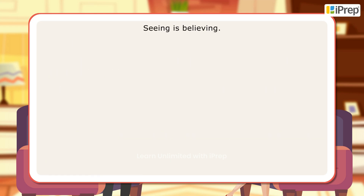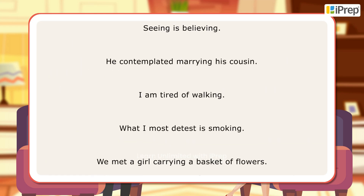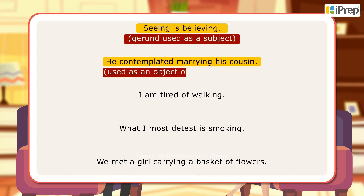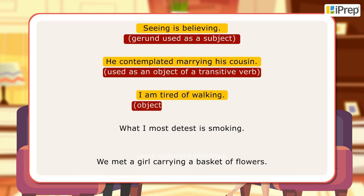Let us look at a few examples. 'Seeing is believing' — gerund used as a subject. 'He contemplated marrying his cousin' — used as an object of a transitive verb. 'I am tired of walking' — object of a preposition.